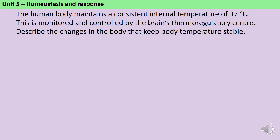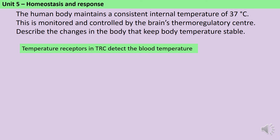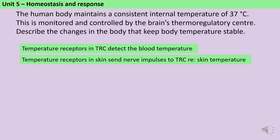In this question we're asked to describe how the body keeps a stable temperature of about 37 degrees Celsius. Although the thermoregulatory centre is named in the question, there is more information I can add about the detection of body temperature. For instance, I can talk about the fact that there are temperature receptors in the thermoregulatory centre and that they're detecting the temperature of the blood. I can also talk about the role of the skin, because the receptors in the skin send nerve impulses to the thermoregulatory centre about the temperature of the skin.